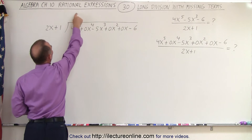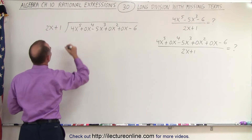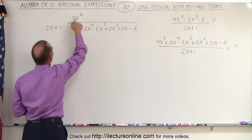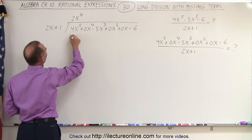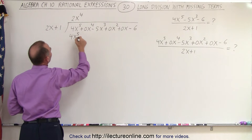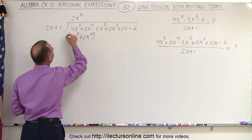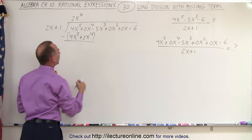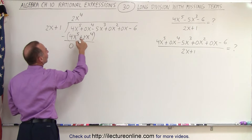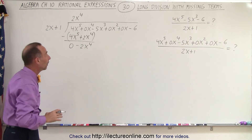We need some expression that when we multiply times 2x, we get 4x to the 5th. So 2x to the 4th comes to mind, because 2x to the 4th times 2x gives us 4x to the 5th, and then 2x to the 4th times plus 1 gives us plus 2x to the 4th. Then we subtract these from the two terms above: this minus this is 0, and this minus this is minus 2x to the 4th.